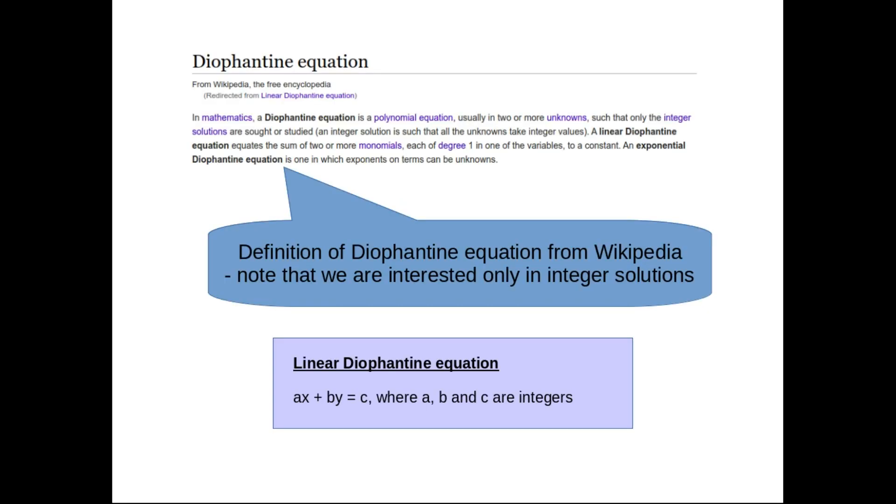This is how Diophantine equations has been defined in Wikipedia. A Diophantine equation is a polynomial equation, usually in two or more unknowns, such that only integer solutions are desired. So we are only interested in finding integer solutions to the equation. Here is a form of a linear Diophantine equation where we have two variables x and y. The equation is ax plus by equal to c where a, b, c are integer numbers. And we have to find out the values of x and y for which this equation will be satisfied.